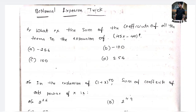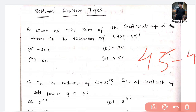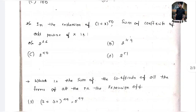Binomial theorem trick one: What is the sum of coefficients of all terms in the expansion of (45x − 49)^4? Read the question entirely. The coefficients are 45 and −49. To find the sum of coefficients, substitute x = 1. So we get (45 − 49)^4 = (−4)^4 = 256. The answer is option D.